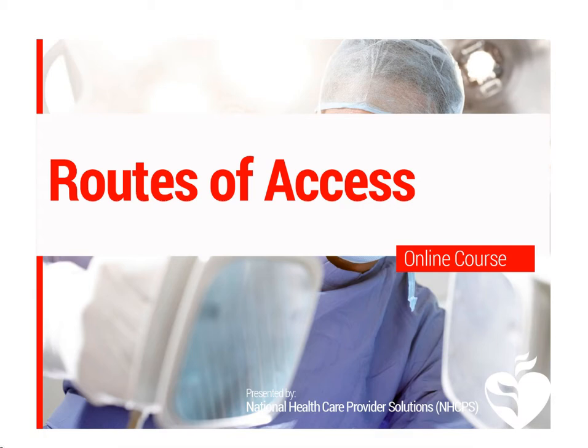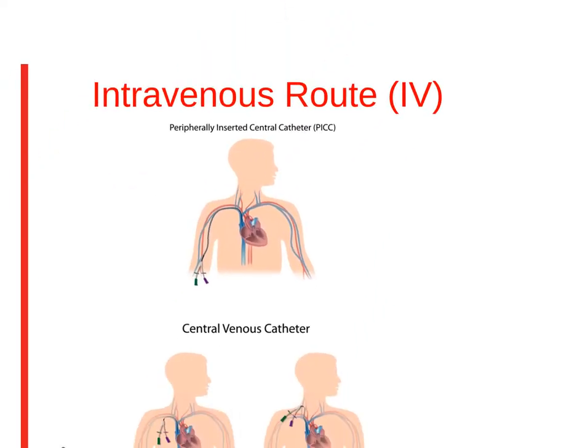The priorities for vascular access are intravenous route and intraosseous route. In the IV route, a peripheral IV is preferred for drug and fluid administration, unless central line access is already available. Central line access is not necessary during most resuscitation attempts, as it may cause interruptions in CPR and complications during insertion. Placing a peripheral line does not require CPR interruption.